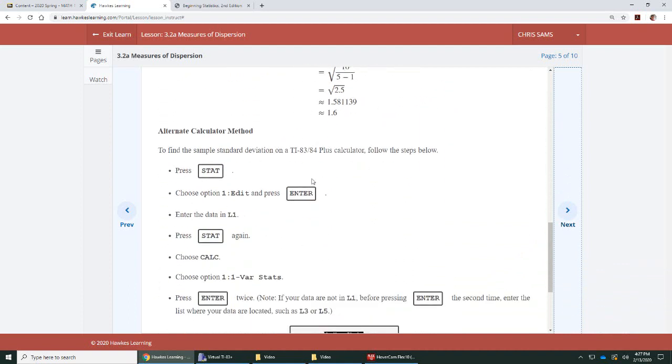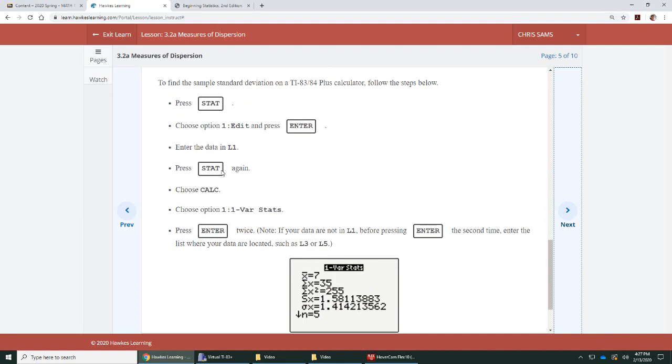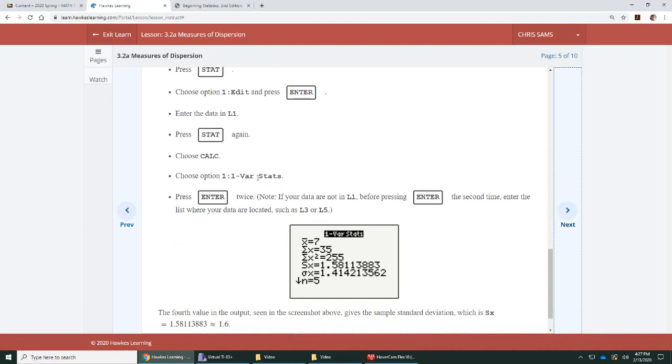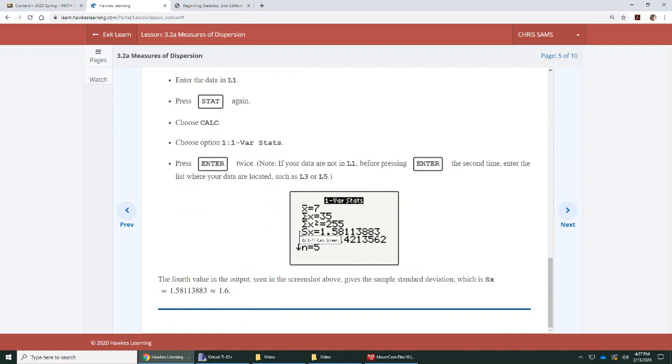Here's what we're going to be doing in the calculator. The same thing we did in the previous section to find mean, median, and mode. We're going to do stat. Enter. We're going to input our list in L1. We're going to go to stat again. We're going to go to calc. One variable statistic. Then we're going to hit enter twice. Or you're going to go down to calculate and hit enter. And it's going to give you this output.